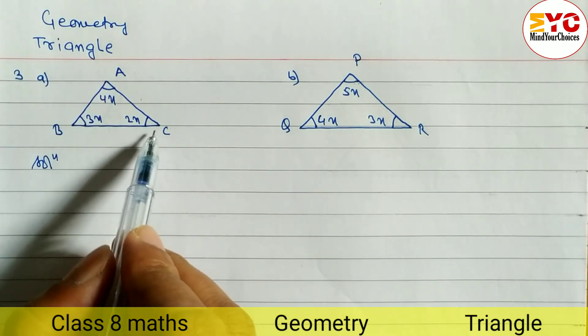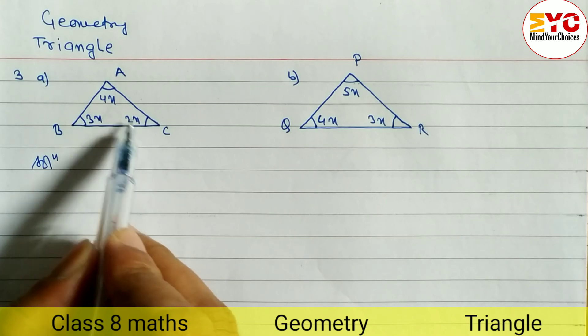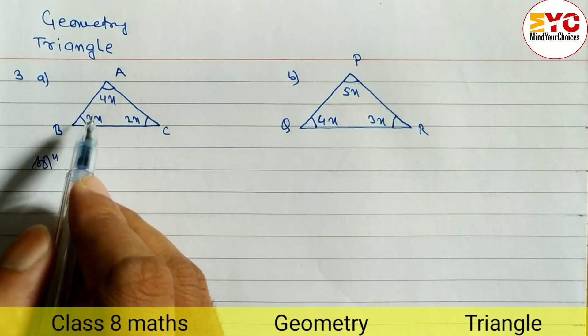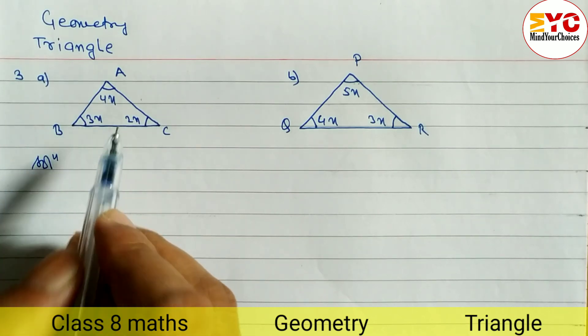So a, b, c is a triangle and we know that sum of angles of the triangle is equal to 180 degrees. So three angles are here: angle a, angle b, angle c.